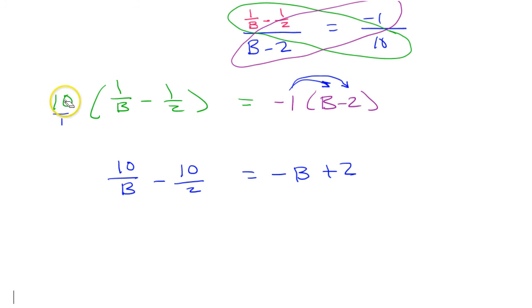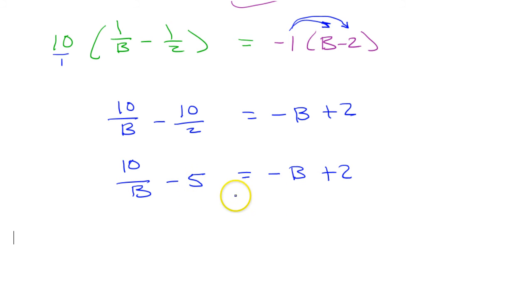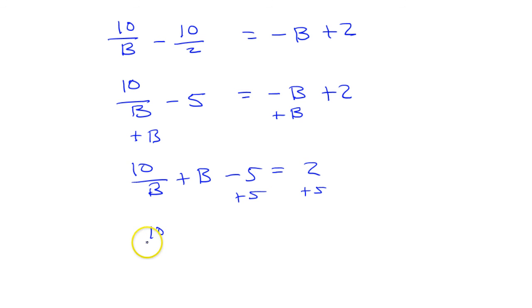So we're getting a lot closer to what we need to have. Let's go ahead and deal with this. 10 divided by 2 is 5. So that gives me 10 over b minus 5 is equal to negative b plus 2. So I'm going to get the b's together. And I will get the constants together. So if I add b to both sides, that gives me 10 over b plus b minus 5 is equal to 2. And now I'm going to add 5 to both sides. So I'm going to have 10 over b plus b is equal to 7.